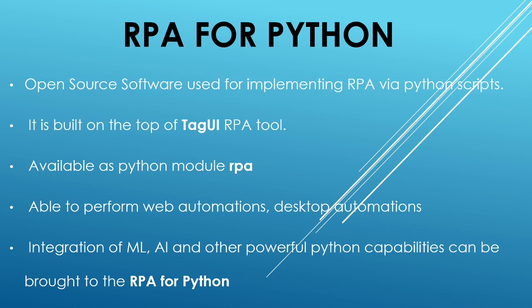I will post its link in the description so you can have a look. The main advantage of integrating RPA or tagUI with Python is that Python is one of the most powerful programming languages, used for many applications around data science, machine learning, AI, and many different computational works. Using these Python capabilities along with the robotic process automation features of tagUI, we can execute many use cases. That is the main advantage I feel around RPA for Python.